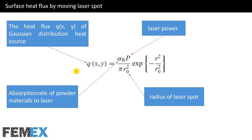The equation of applied heat flux by using a laser spot is shown here. In this equation, R is a variable and it is a function of time and position because this flux is a moving heat flux. Some parameters are constant in the problem, but R is not constant — it is a function of position and time.